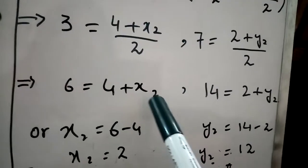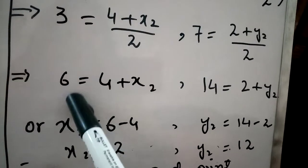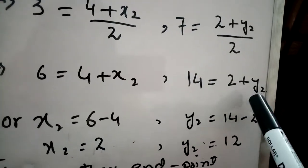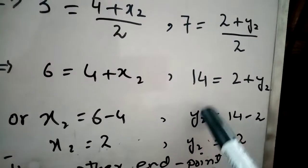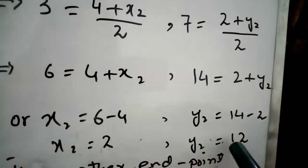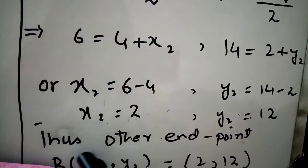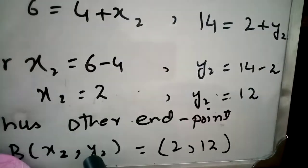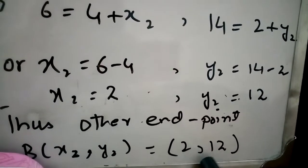We can write x₂ equals 6 minus 4, which gives 2. Similarly, we can write y₂ equals 14 minus 2, which gives 12. Thus, the other endpoint B(x₂,y₂) equals (2,12).